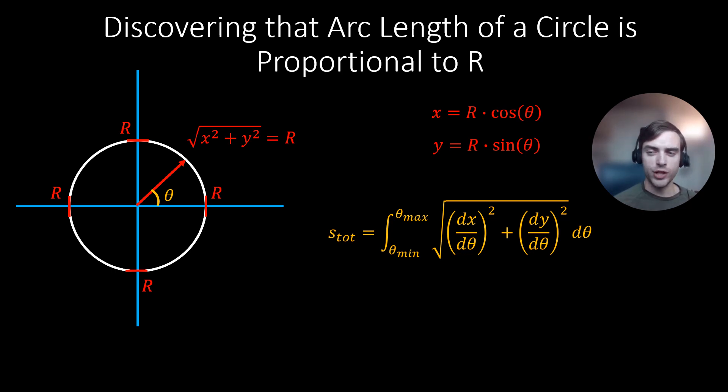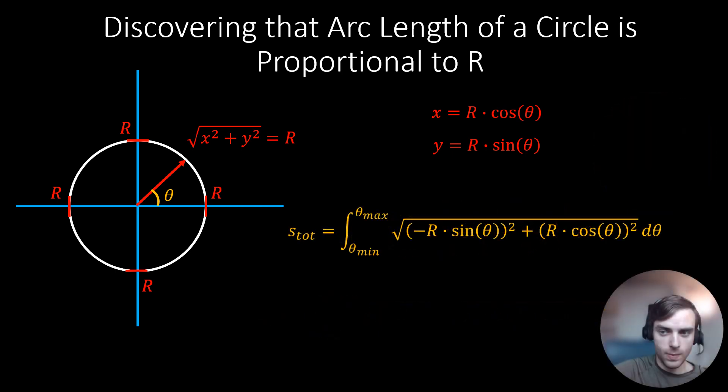So now that we have the general equation for arc length of a line parametrized by theta in the x-y plane, we will make specific substitutions that represent our circle. So our circle is parametrized by theta, such that x is equal to r times cosine of theta, and y is equal to r times sine of theta. So we now proceed with the correct substitutions into this general equation for arc length. And then we simplify even further.